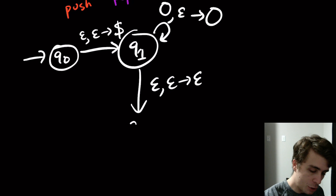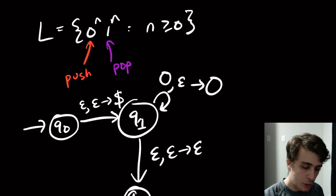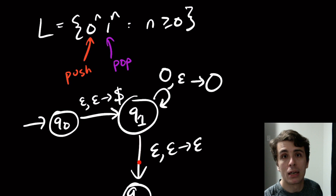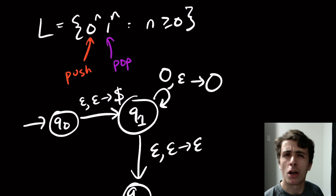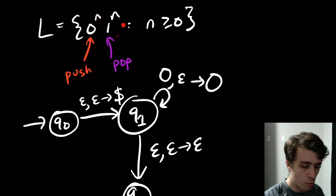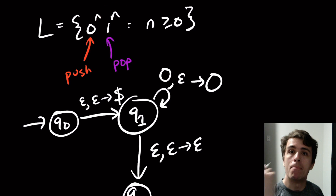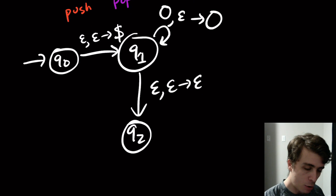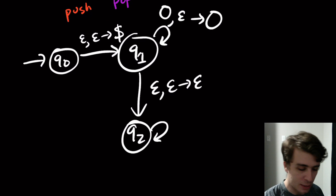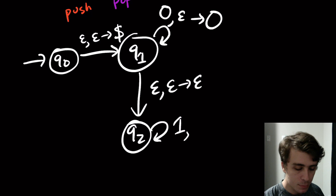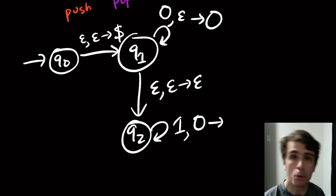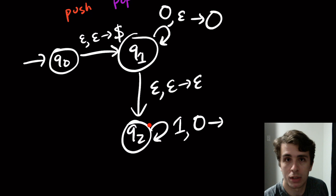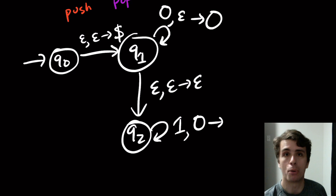This epsilon transition comes down to another state, q2. This is the non-deterministic choice to say: I'm going to start working on the ones now. For the ones part, I need to read a one but pop off a corresponding zero that was pushed onto the stack. So we make a self-loop on q2: we read a one, we pop a zero.